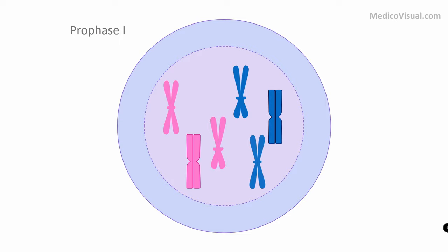In meiosis there is the concept of homologous chromosomes. We have 23 chromosomes that came from the mother through the ovum and 23 chromosomes that came from the father. Similar chromosomes from mother and father become like a couple — they come close to each other and exchange their parts, and that happens in prophase one. There is no demarcation of homologous chromosomes in mitosis.